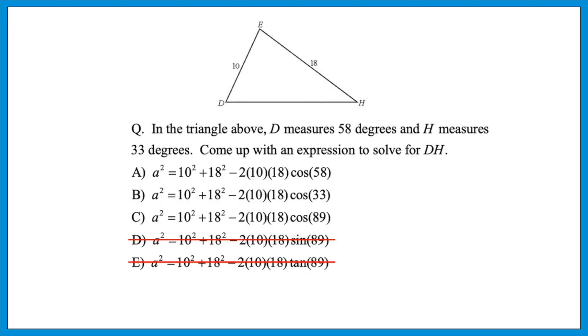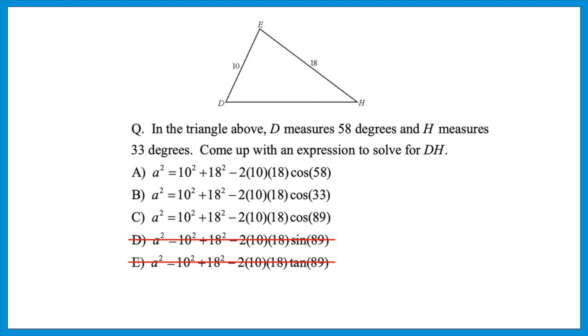Just knowing they're giving you the law of cosines means that's the formula in play — so right away you can knock out D and E. Now we're left with A, B, and C. They tell us that D is 58 and H is 33. And knowing a triangle adds to 180 degrees, the missing angle E is 89 degrees. We want side DH, and DH is across from angle E — or 89 degrees. That means the formula is going to involve the cosine of 89, which tells us the answer is C. When dealing with the law of cosines or law of sines, just knowing what side you want and the angle that corresponds to it is often enough to knock out at least two or three wrong answers.